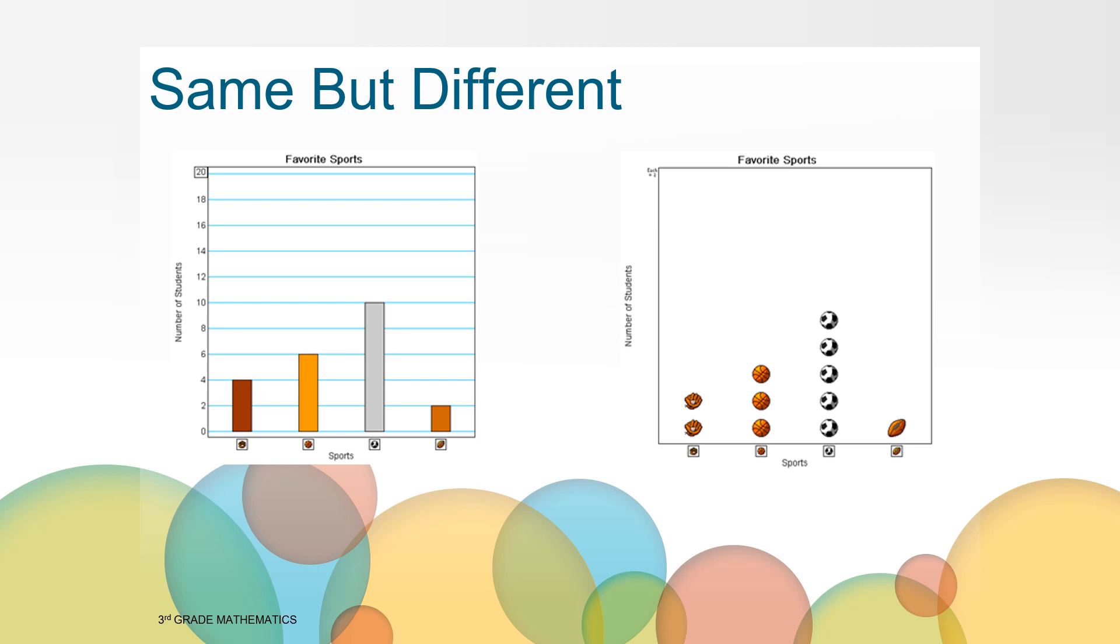Some of you might have wondered if the data or numbers of students voting for each sport are actually the same for each graph. For example, the bar and the basketball pictures look to be about the same height, but do they actually represent the same number? If you said no, you are correct. There are six students represented in the bar graph. We can use the numbers on the side to see that. But in the pictograph, there are only three basketballs. So right now, without a key telling us otherwise, it looks like only three students voted for basketball as their favorite sport in the pictograph.